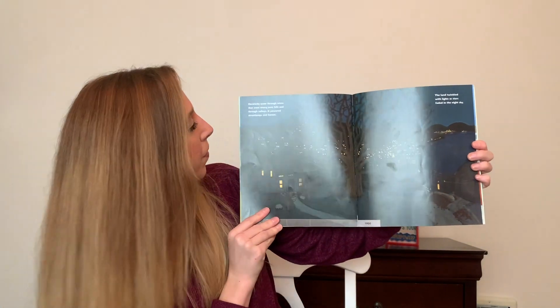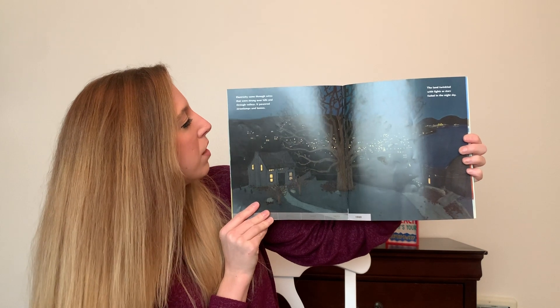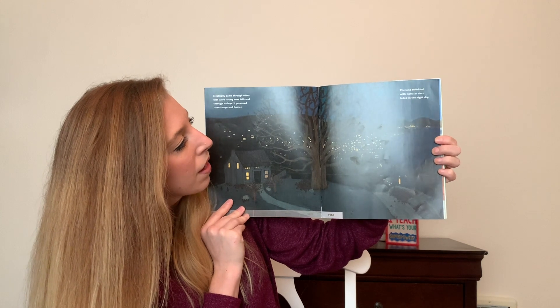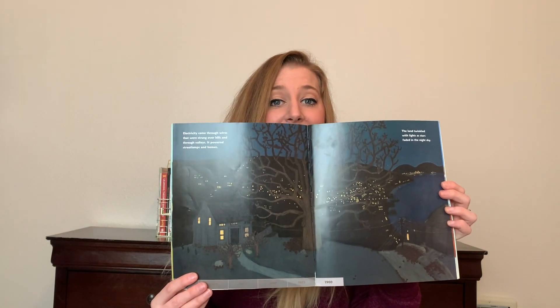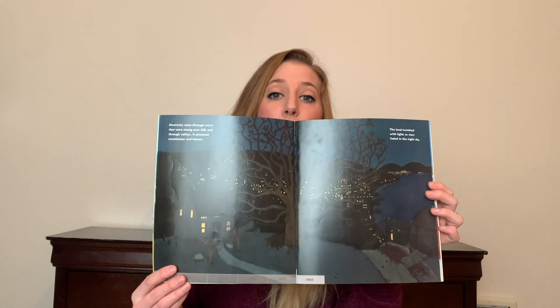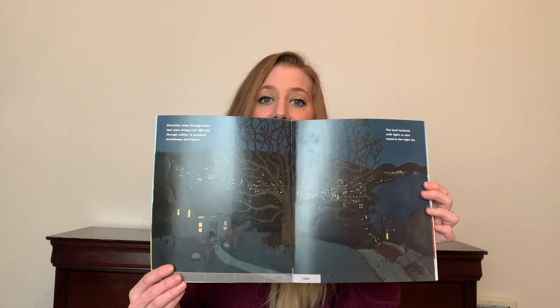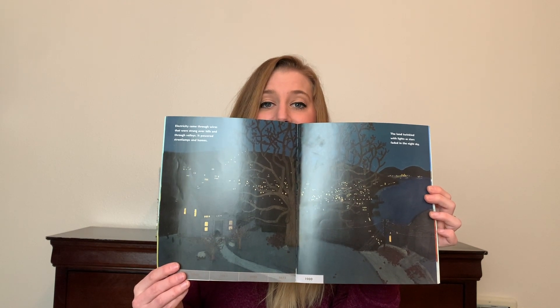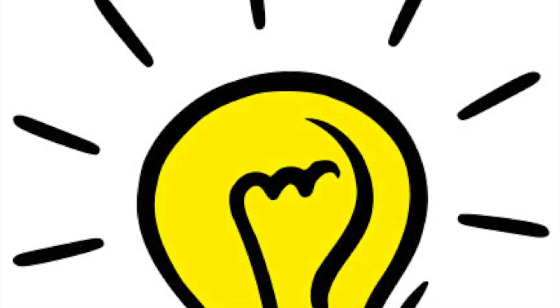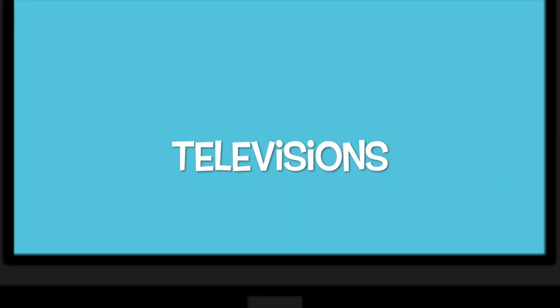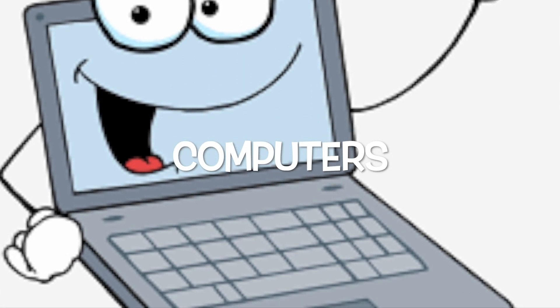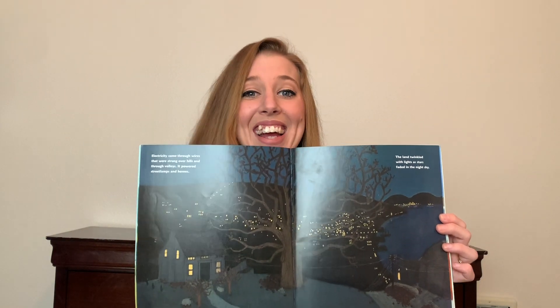This is the year 1900. Electricity came through wires that were strung over hills and through valleys. It powered street lamps and homes. The land twinkled with lights as stars faded in the night sky. Did you know that we did not have electricity until the year 1900? So before people had light switches and light bulbs, they had candles and fireplaces. Can you tell me some other things that run on electricity? Fantastic job!